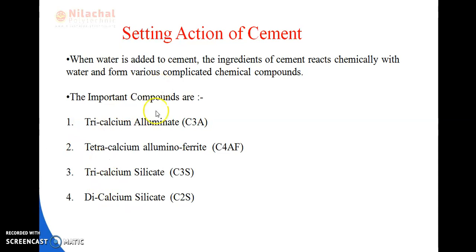These are the important compounds that react chemically when we add water to the cement. Also, while adding water to the cement, some amount of heat is produced. The ingredients — lime, silica, magnesia, alumina, calcium sulphate, iron oxide — these are the ingredients that react chemically with water and form chemical compounds. Remember that some amount of heat is also produced while adding water to the cement.